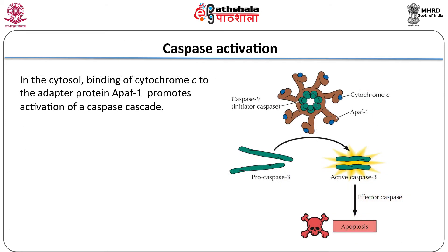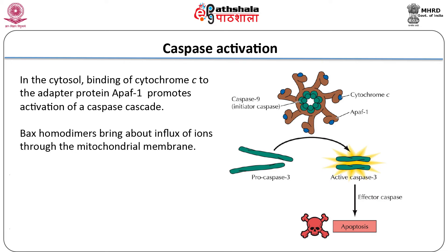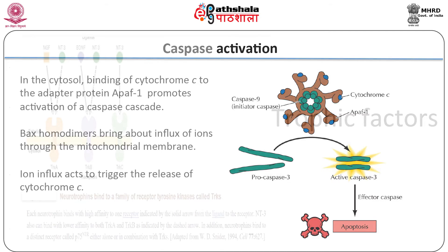In the cytosol, binding of cytochrome c to the adapter protein APAF-1 — the mammalian CED4 — promotes activation of a caspase cascade. BAX homodimers, but not BCL2 homodimers or BCL2/BAX heterodimers, permit influx of ions through the mitochondrial membranes. It remains unclear how this ion influx acts to trigger the release of cytochrome c.